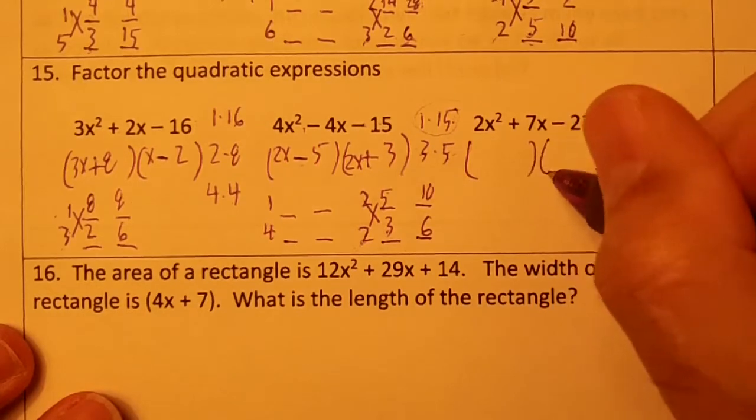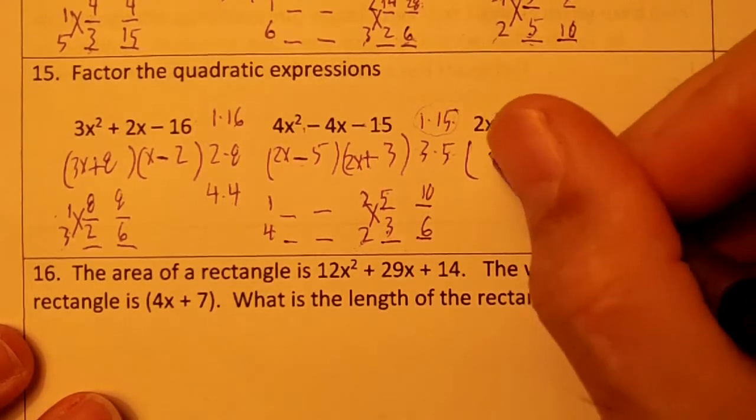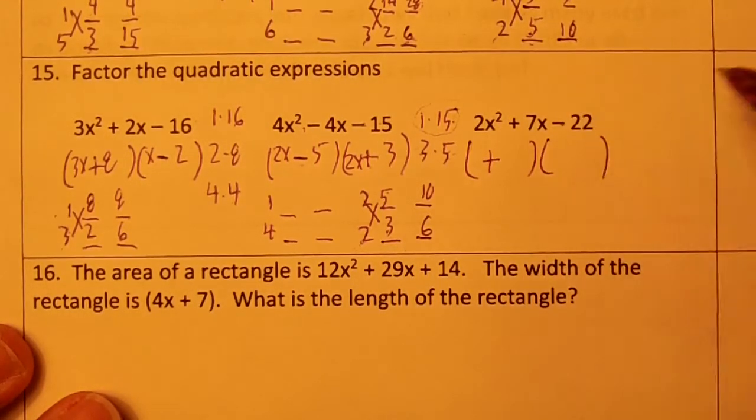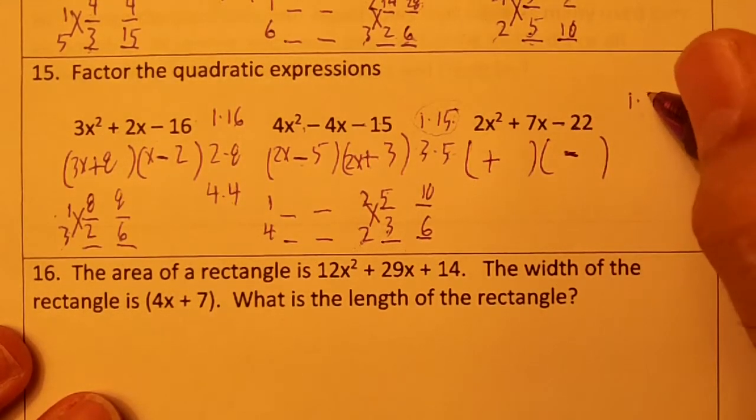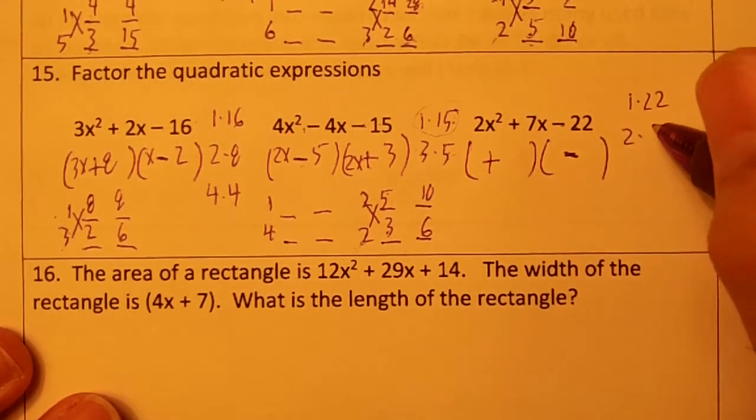Draw your two parentheses. Drop the first sign. This means they're different. So draw a minus. Write your factors of 22 down. 1 times 22 and 2 times 11.